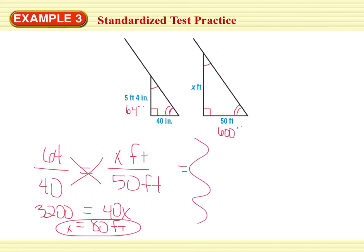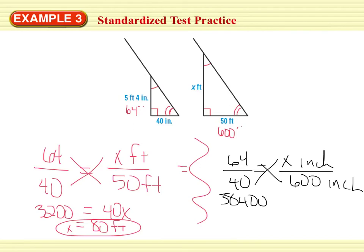Just to keep it clear, if we would have kept everything in inches, we would have had 64 over 40 equals x inches over 600 inches. Cross product. 64 times 600 is a big number. Equals 40x. Divide both sides by 40. x equals 960. Divide by 12 to get it back into feet. Equals 80. Got the same answer. Cool. Nice job.